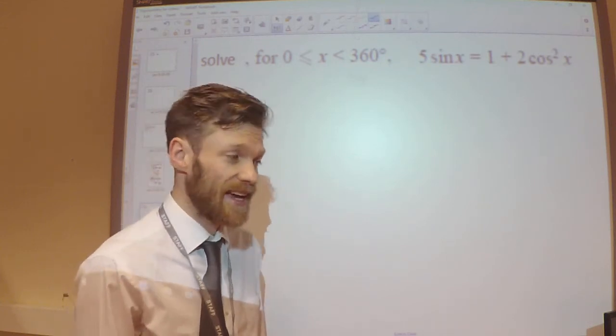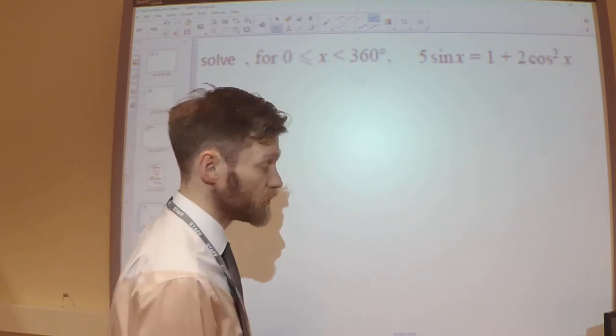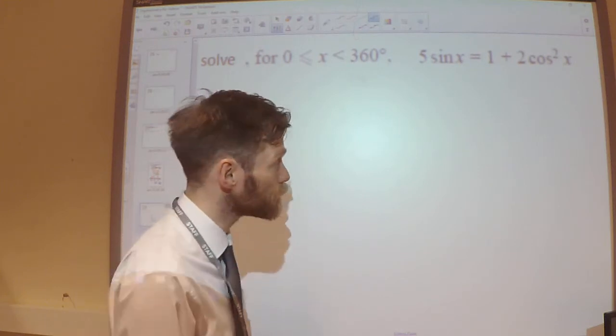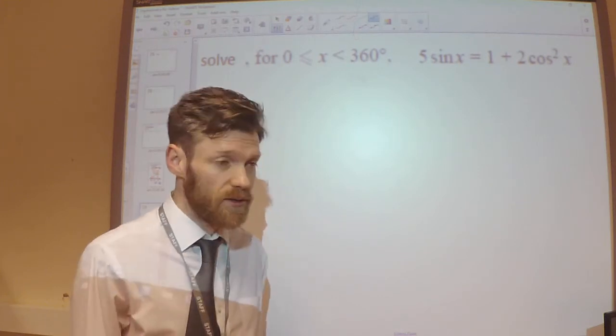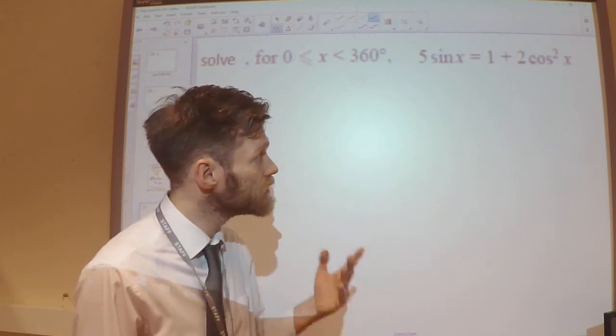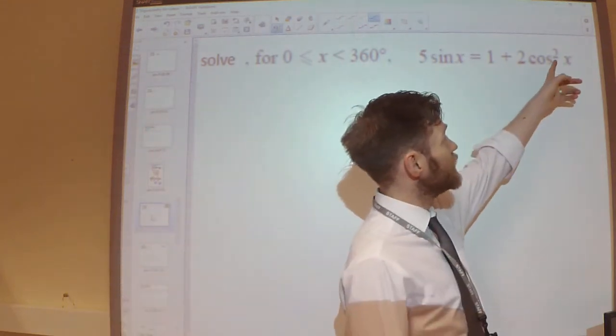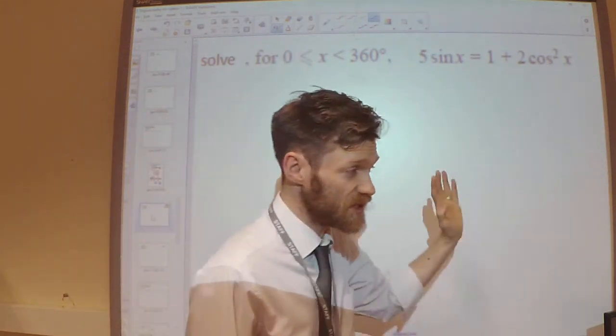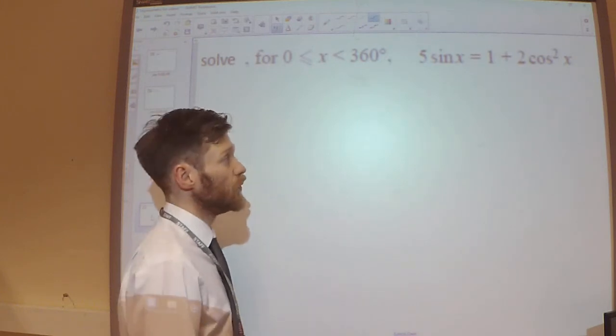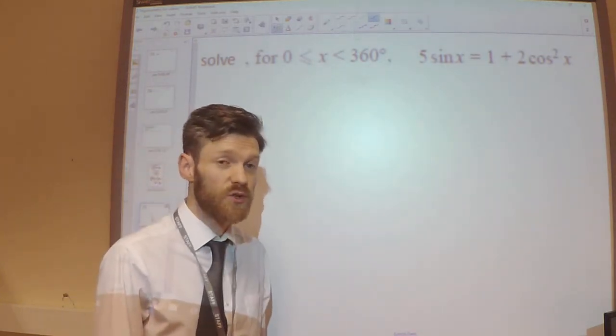So we're going to need to use the identity. I can't use the tan identity here because of this squared. That prevents me from using the tan identity. So in fact, I'm going to use the squared identity.